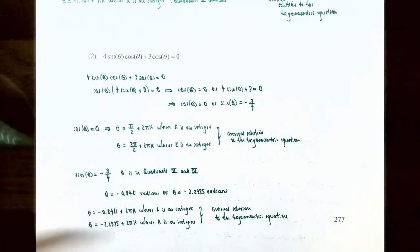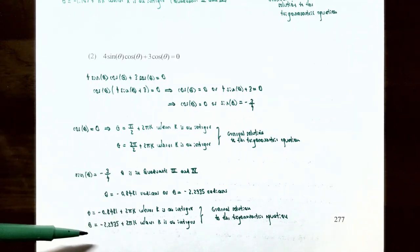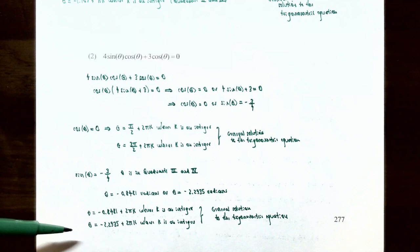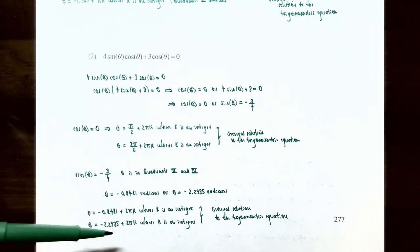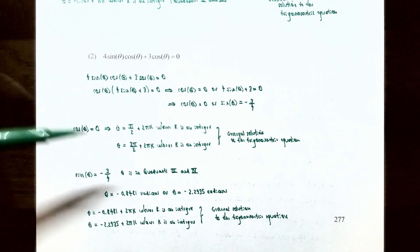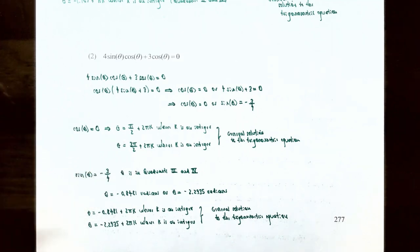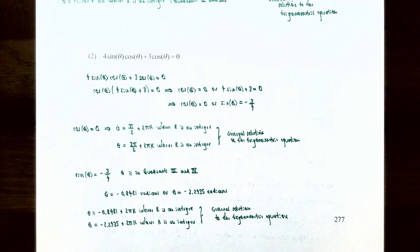There is also an angle in quadrant 3 where sinθ = −3/4, which is θ ≈ −2.2935 radians, plus a multiple of 2π. So the general solution for quadrant 3 is θ = −2.2935 + 2πk. Any angle of the form θ = π/2 + 2πk, θ = 3π/2 + 2πk, θ = −0.8481 + 2πk, or θ = −2.2935 + 2πk will be a solution to 4sinθ cosθ + 3cosθ = 0.